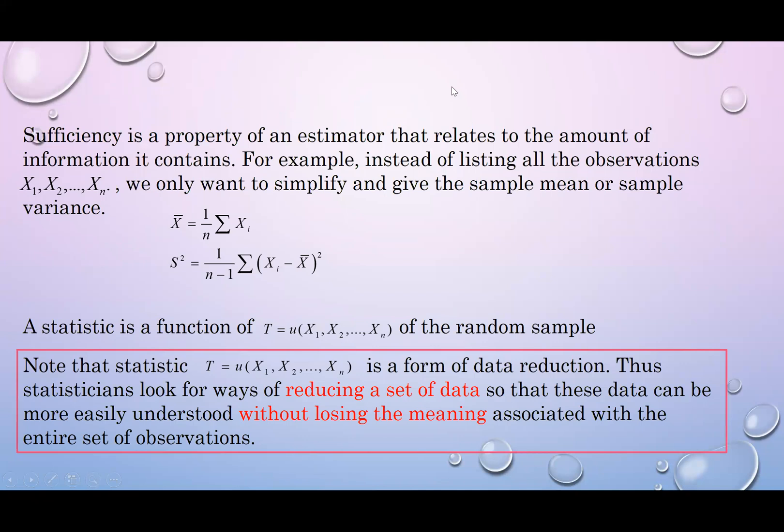Sufficiency is a property of an estimator that relates to the amount of information it contains. Normally, what we do is listing all the observations x1, x2, xn. But now, we only express the observation in terms of sample mean and sample variance. So this is called a statistic which is a function of the random sample. And this statistic T is a form of data reduction. Thus, statisticians look for ways of reducing a set of data so that this data can be more easily understood without losing the meaning associated with the entire set of observations.